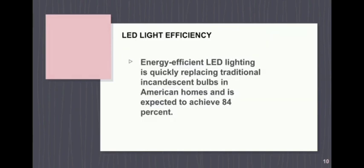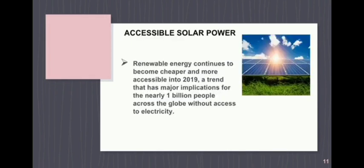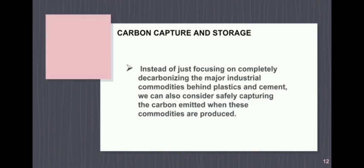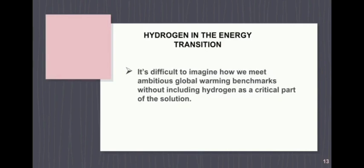Sixth is LED light efficiency — LED lighting is quickly replacing traditional incandescent bulbs and will reduce energy consumption by 40%. Seventh is accessible solar power, with major implications for the nearly 1 billion people worldwide without access to electricity. Eighth is carbon capture and storage, which allows industry to capture carbon at its source, compress it, and move it to a suitable permanent storage site, potentially reducing greenhouse gas emissions and creating economic value. Ninth is hydrogen in the energy transition — it is difficult to meet global warming benchmarks without hydrogen as a critical part of the solution.